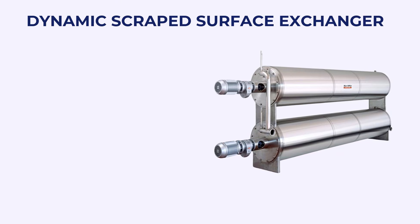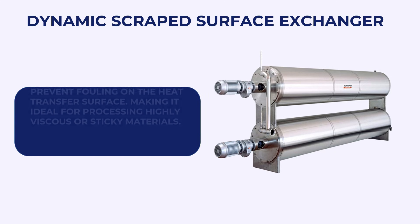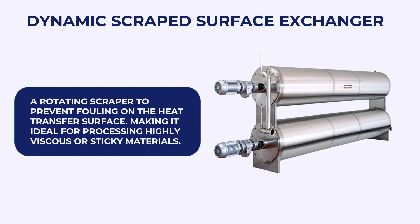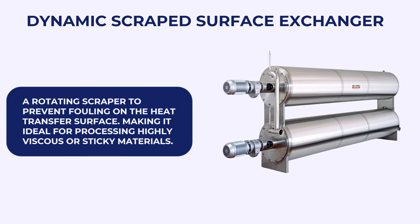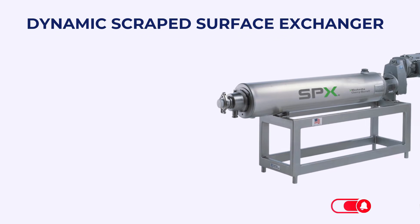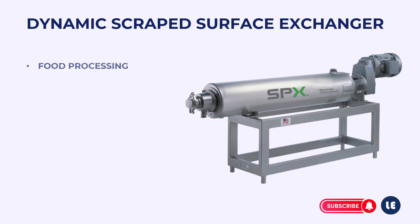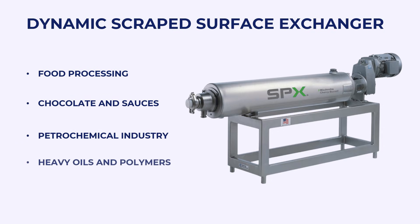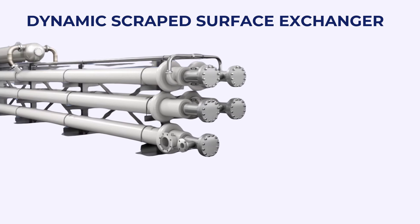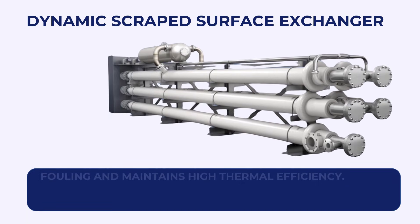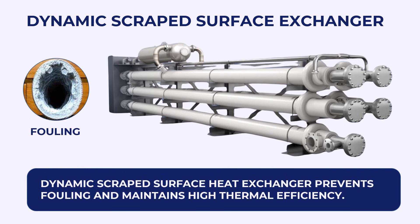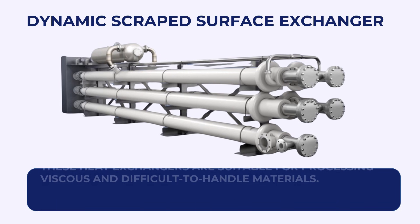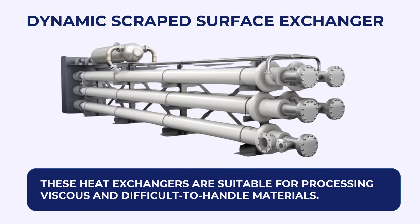Dynamic Scraped Surface Heat Exchanger. A dynamic scraped surface heat exchanger includes a rotating scraper to prevent fouling on the heat transfer surface, making it ideal for processing highly viscous or sticky materials. It is used in food processing for chocolate and sauces, and in the petrochemical industry for handling heavy oils and polymers. It prevents fouling and maintains high thermal efficiency, and is suitable for processing viscous and difficult-to-handle materials.